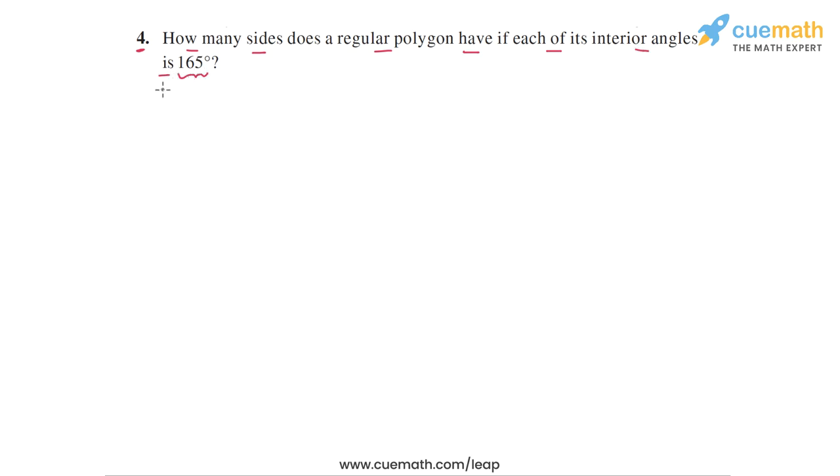So we have a regular polygon, we don't know its number of sides, but we do know that each of the interior angles has a measure of 165 degrees. Using this, we have to find the number of sides of the polygon.